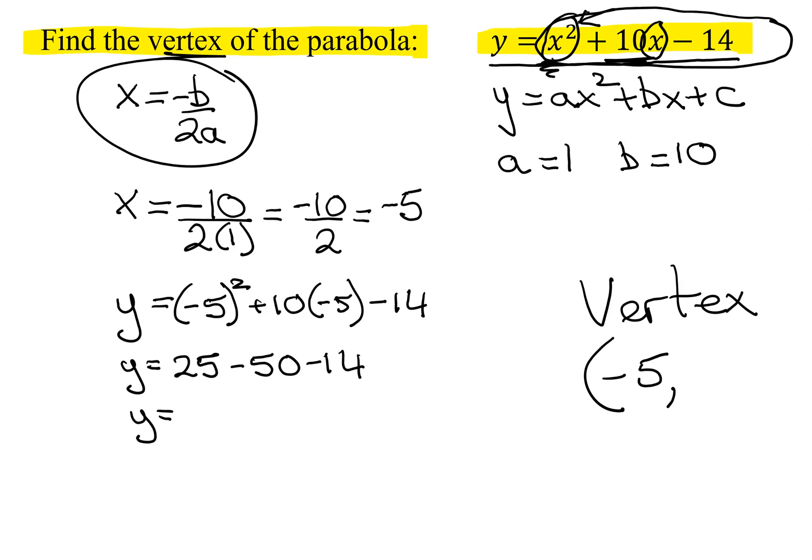So y equals 25 minus 50 is negative 25 minus 14. So y equals negative 25 minus 14 is negative 39. Now I have found the y-value of the vertex. I have the coordinates of the vertex of this parabola.